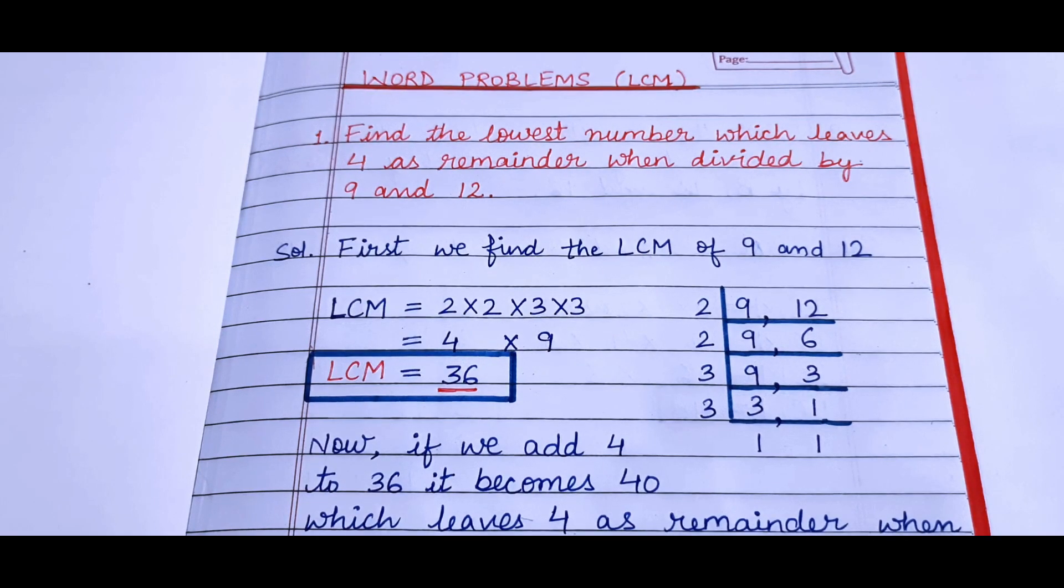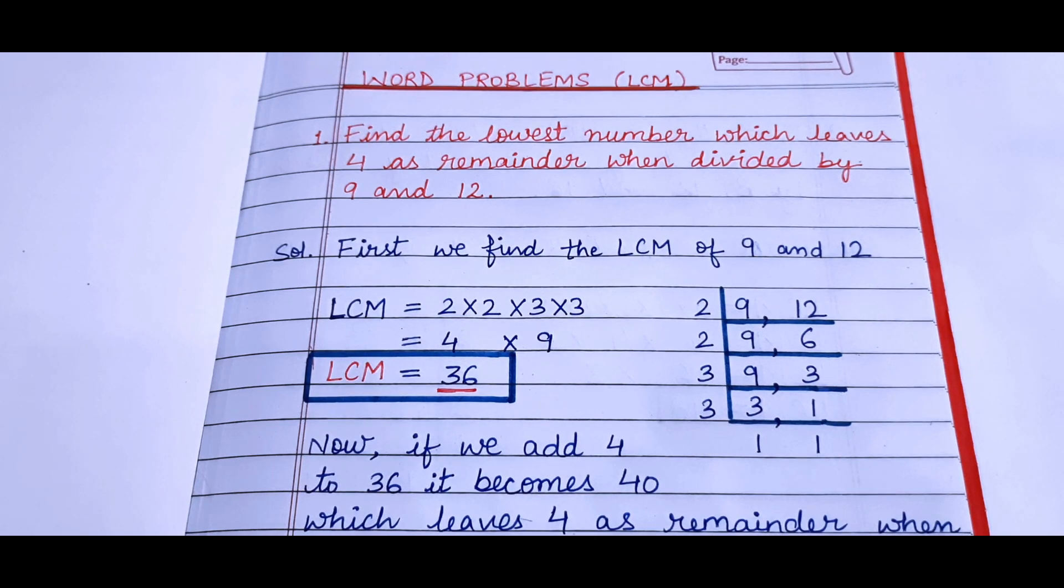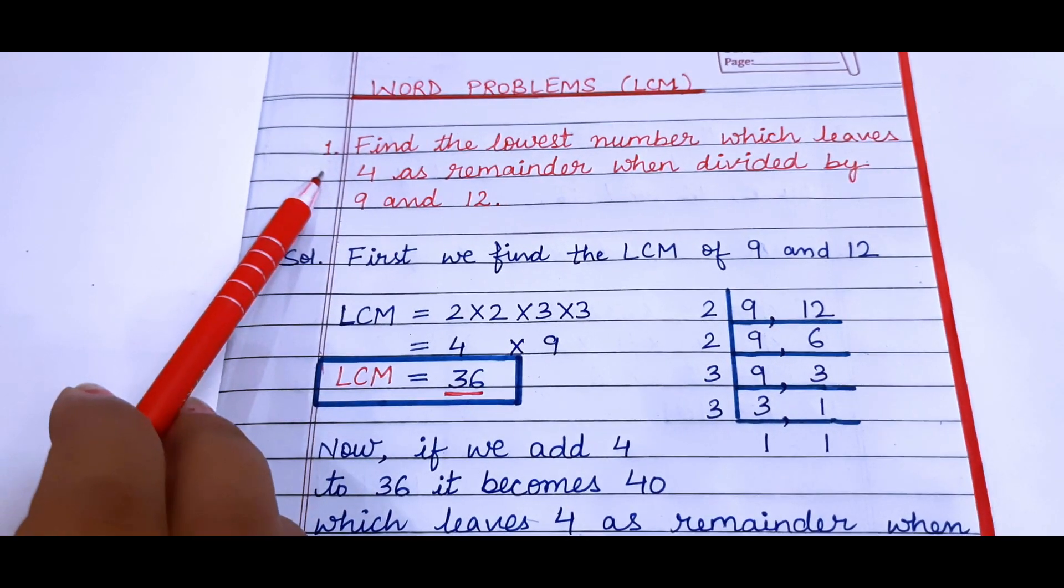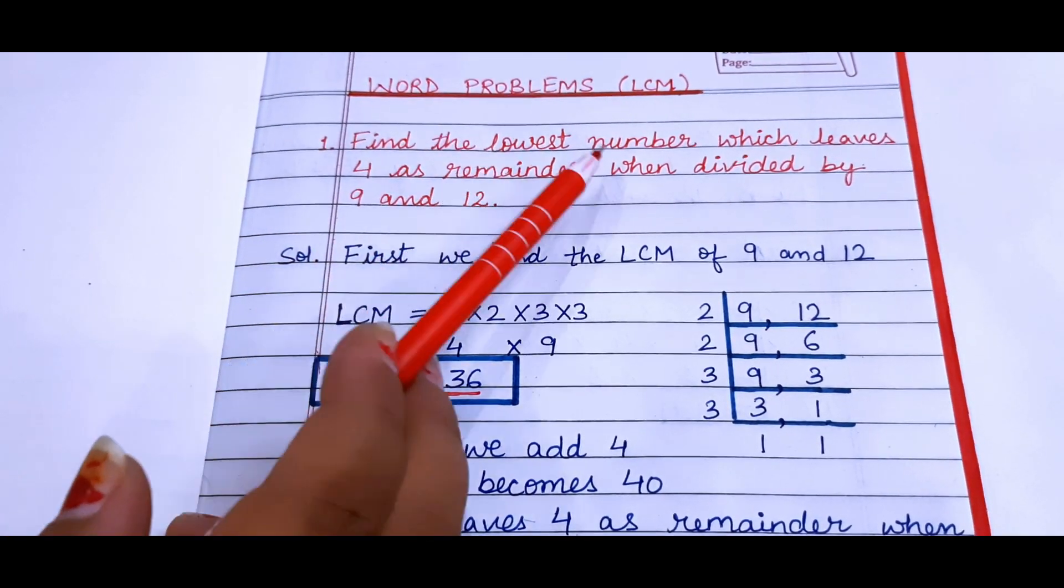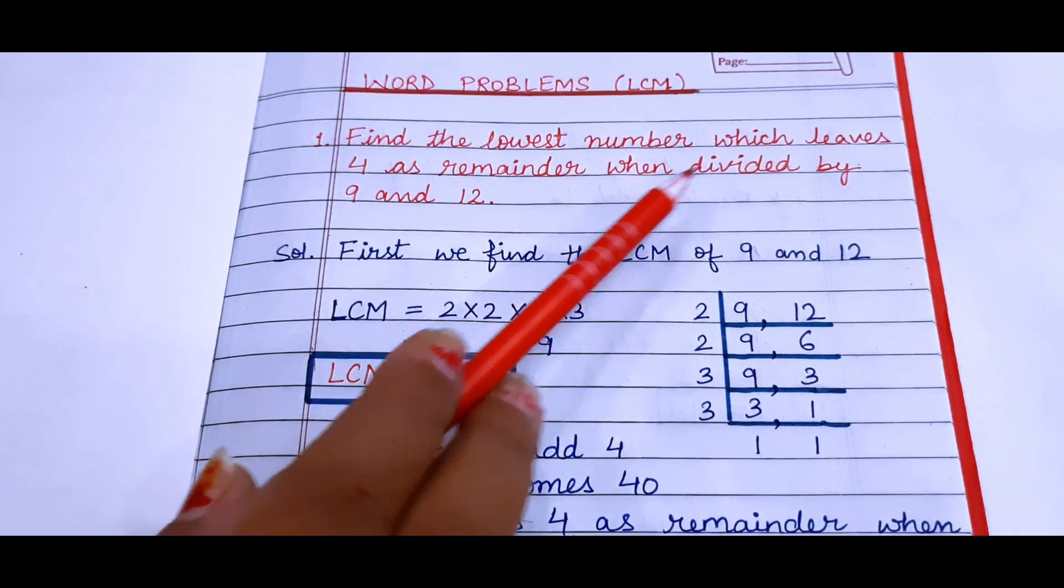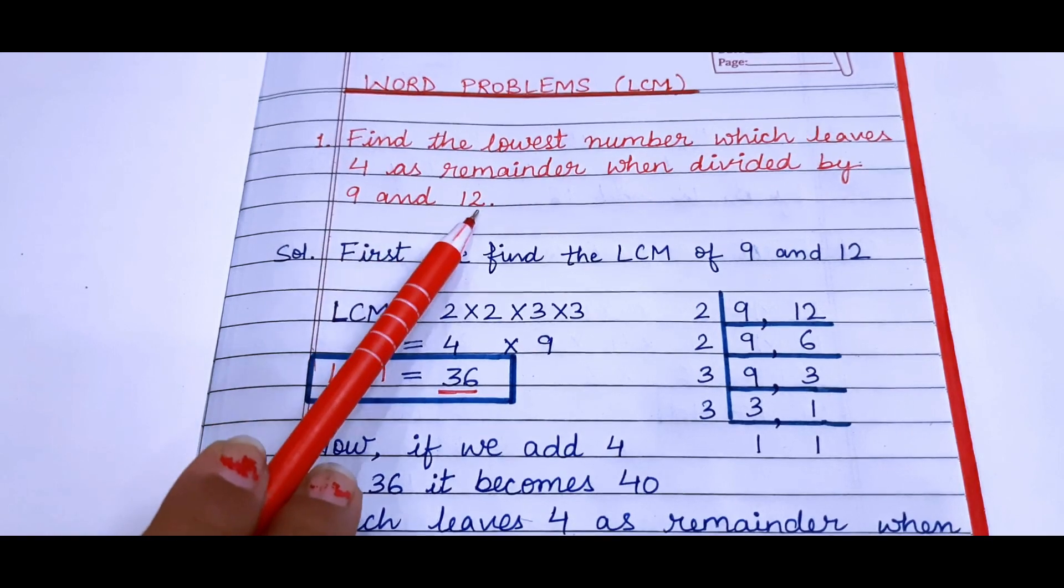Good morning everyone. Today in this video I will explain some word problems of LCM. The first question is: find the lowest number which leaves 4 as remainder when divided by 9 and 12.